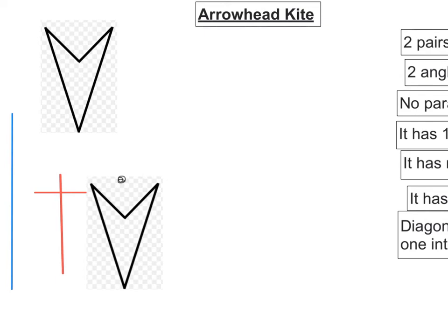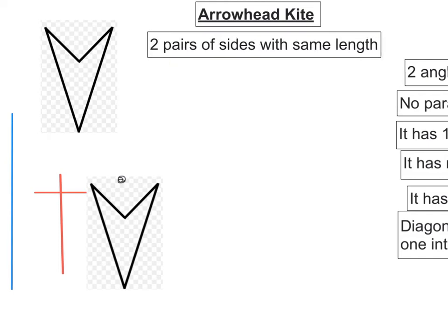In this video we'll look at the properties of an arrowhead kite. Now just like a kite, it has two pairs of sides with the same length. So these ones and these two are the same.